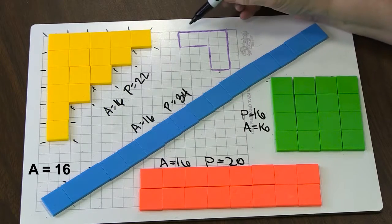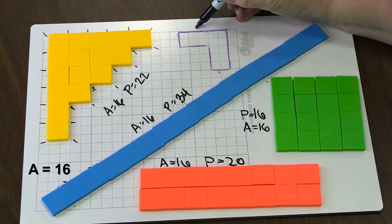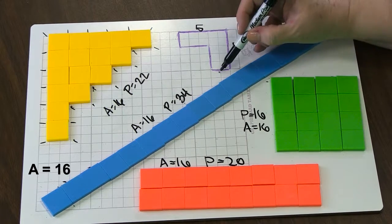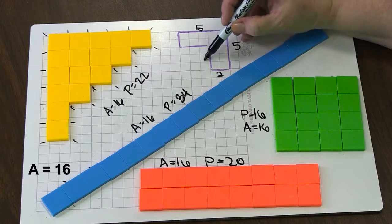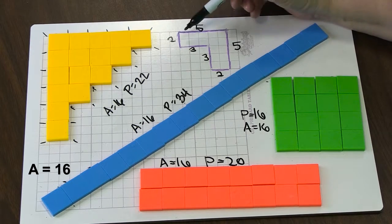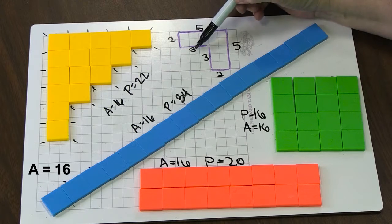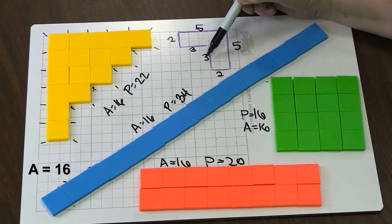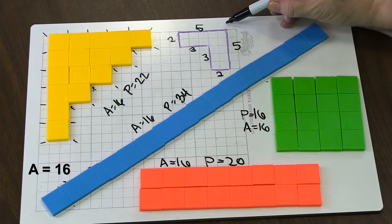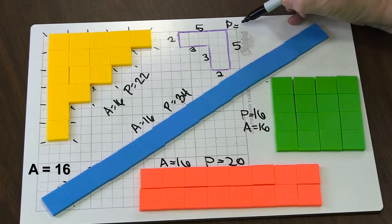So on this shape here, we have one side of five. This side is five as well. This is a two. We have a three here, a three here, and a two here. And they might notice that the two and three make five here and here, and they could skip count then: five, ten, fifteen, twenty. And so here they have a perimeter of 20.